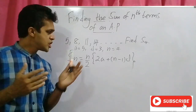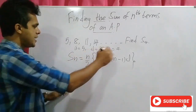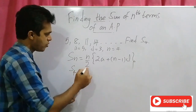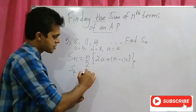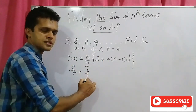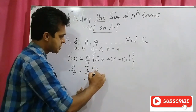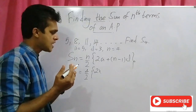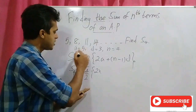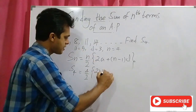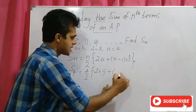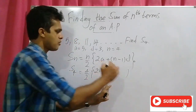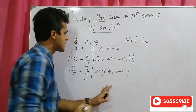Now let's substitute these values. n equals 4, so we have 4 over 2 times 2 times a — the value of a equals 5 — plus n minus 1 times d, where n equals 4.